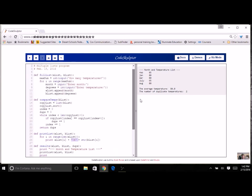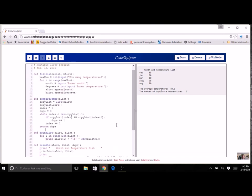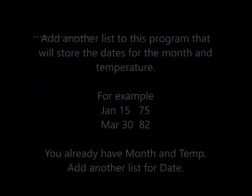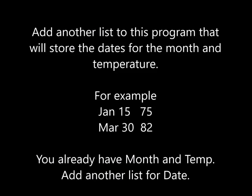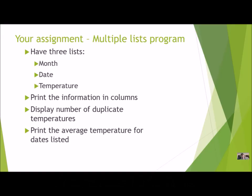Now your program is going to be finished when you add a few more things to it. Now that we worked on some programming together dealing with multiple lists, you're going to keep this program and add a few things before you turn it in. For the multiple lists program to be complete, you should have three lists: one for the month, one for the date, and one for the temperature — keeping all related information together with the same index. You should be able to print the information in columns, display any number of duplicate temperatures, and print the average temperature for the dates listed.